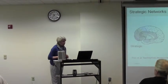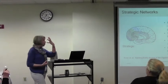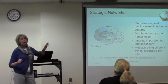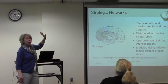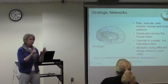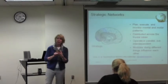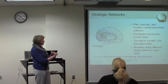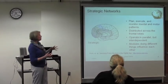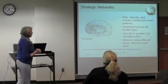And then there are the strategic networks, which are centered more toward the frontal lobe and the parietal lobe. This is where executive function occurs, which means planning, organizing, monitoring, and self-regulation — those sorts of things occur in these strategic networks.